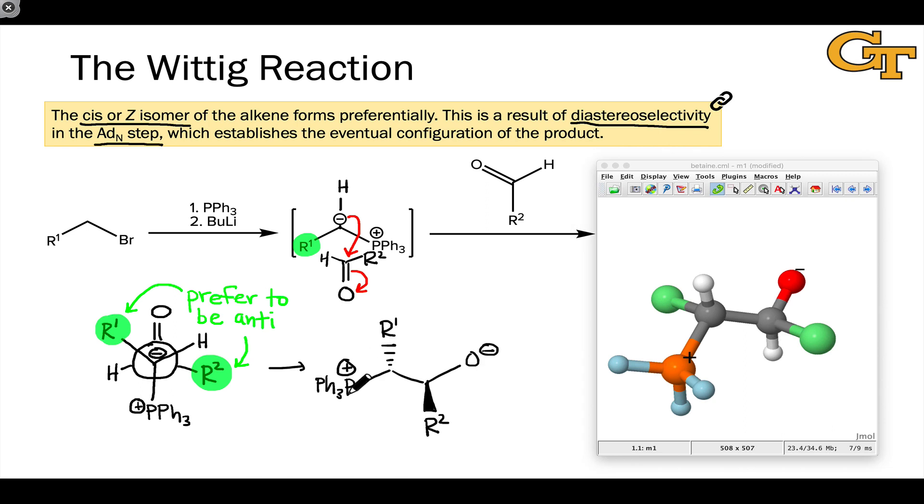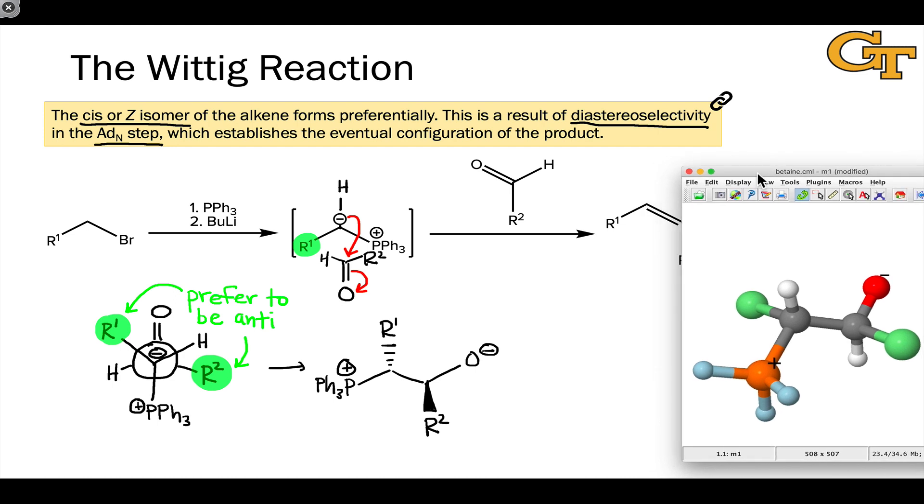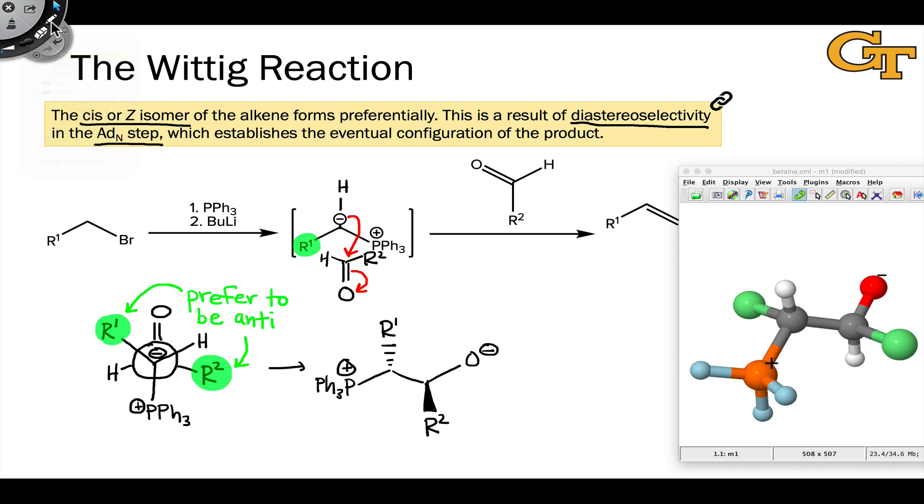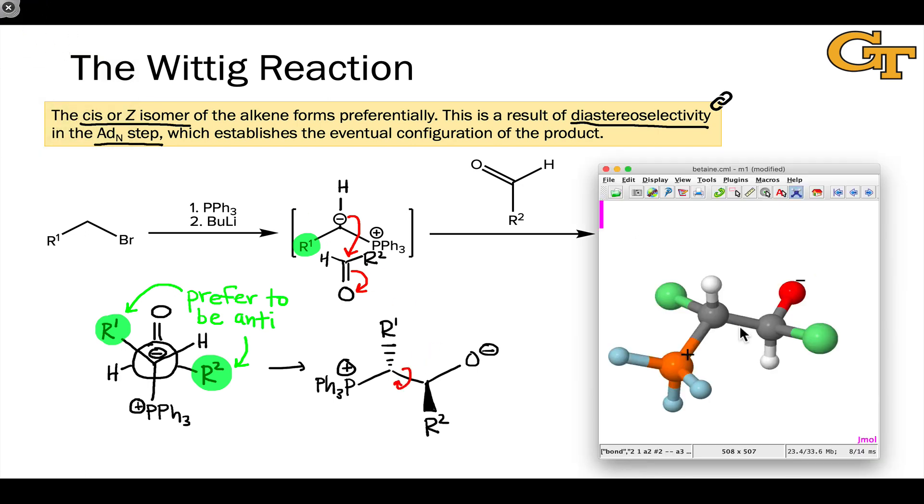Here's a wedge-dash projection of that same intermediate that we're seeing on the right. In order to proceed forward, we know that oxygen and phosphorus have to form a bond. This actually requires a rotation of the central carbon-carbon bond. Let's perform that rotation now to see what happens to this intermediate before the key bond forming step.